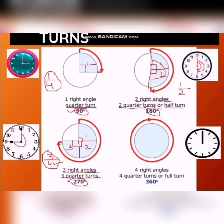Now, four right angles make a complete turn. Our turn starts from 12, moves all the way around, and ends back at 12. It makes four right angles, four quarter turns, which is one full turn. A full turn makes an angle of 360 degrees.